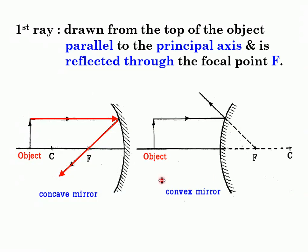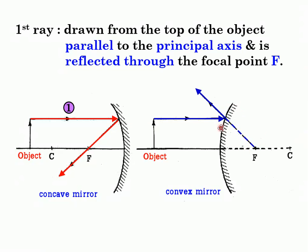For a convex mirror, the focal point is behind the mirror. So from the top of the object, draw toward the mirror, then put your ruler at the focal point and draw dotted lines to where the first ray hits the mirror — the ray bounces back out. Remember, anything behind the mirror must use dotted lines because the focal point is behind the mirror.